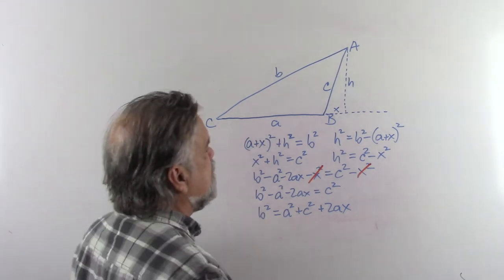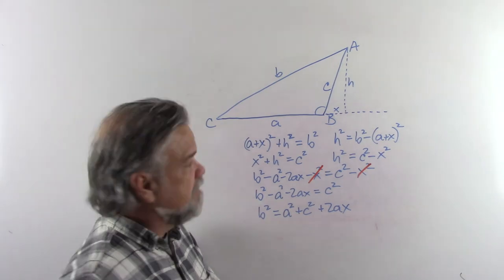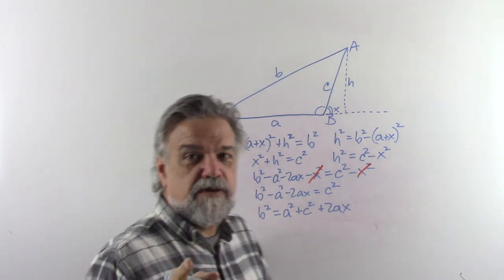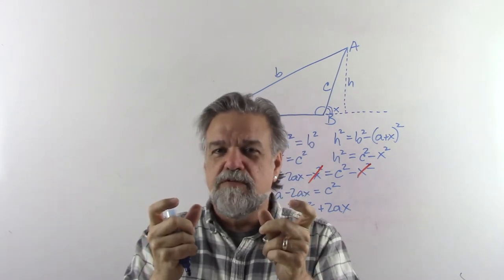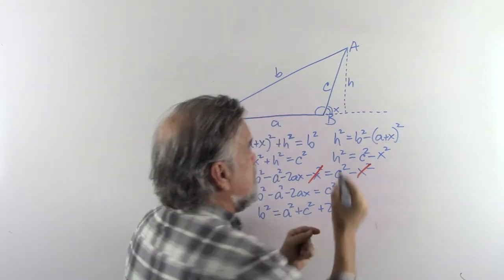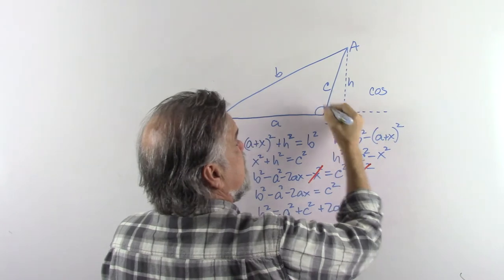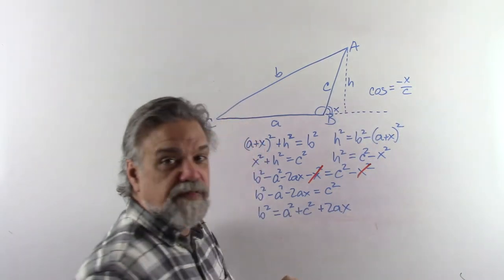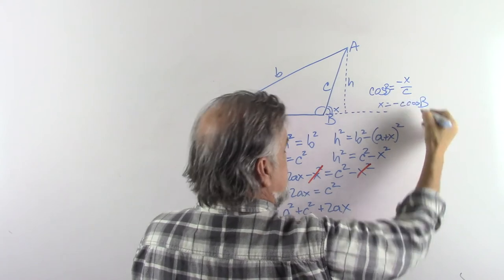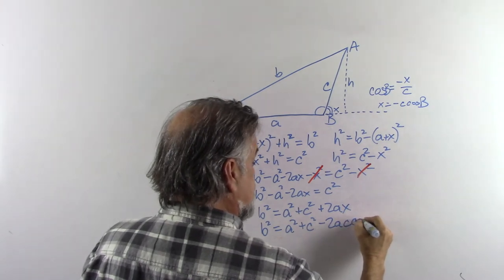Now it's time to find what X is. Here's my angle B. I don't have a right triangle that angle's in; however, I do have this angle over here that is the supplement of angle B. I remember something about supplementary angles: if two angles are supplementary, they have the same sine, but their cosines are negatives of each other. The cosine of the supplement is X over C, so the cosine of angle B equals negative X over C, which means X equals negative C times the cosine of B. Plugging that in: B squared equals A squared plus C squared minus 2AC cosine of B.